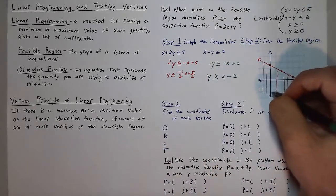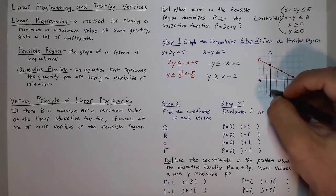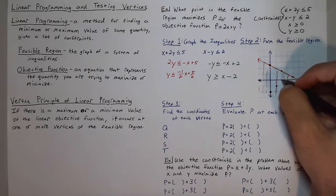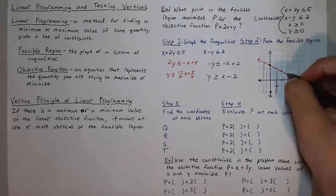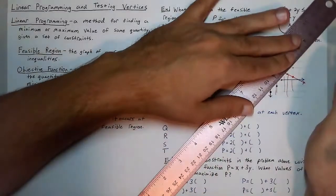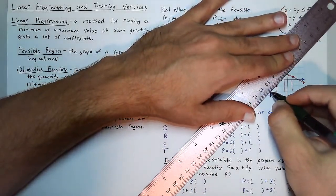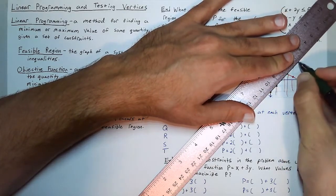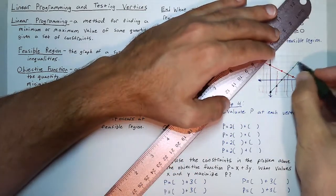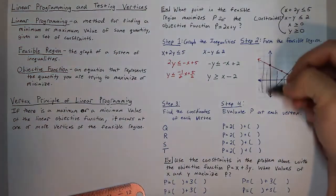So a y intercept of negative 2, and a slope of 1, so up 1 over 1, and so on and so forth. And take your straight edge and draw a line. And everything that is above this green line.